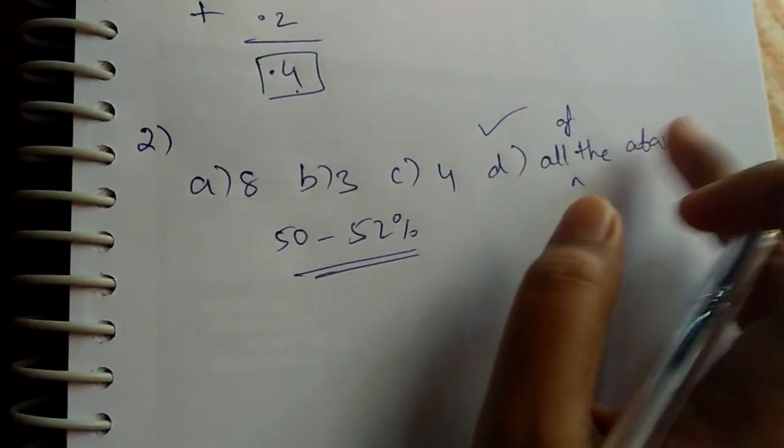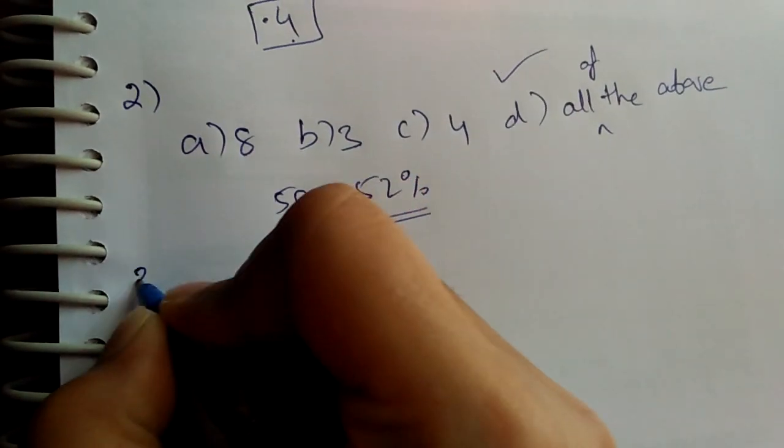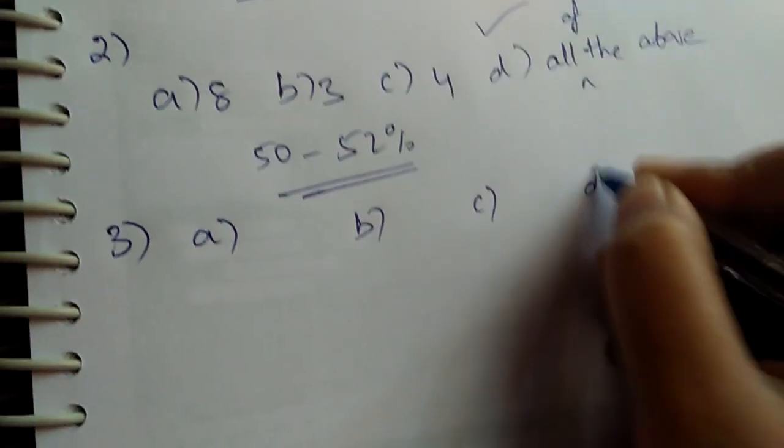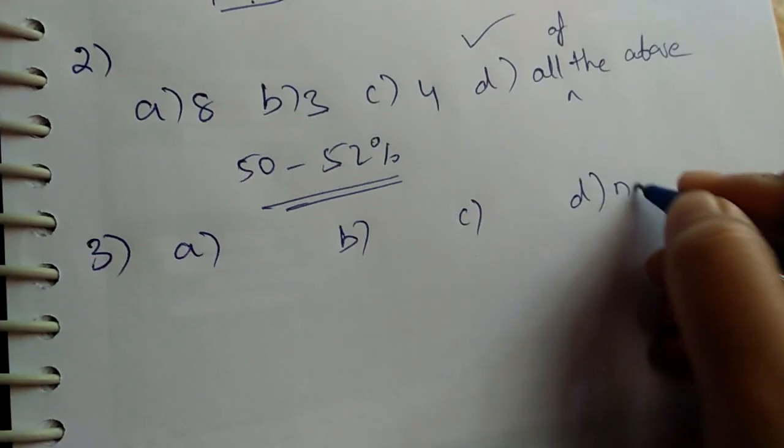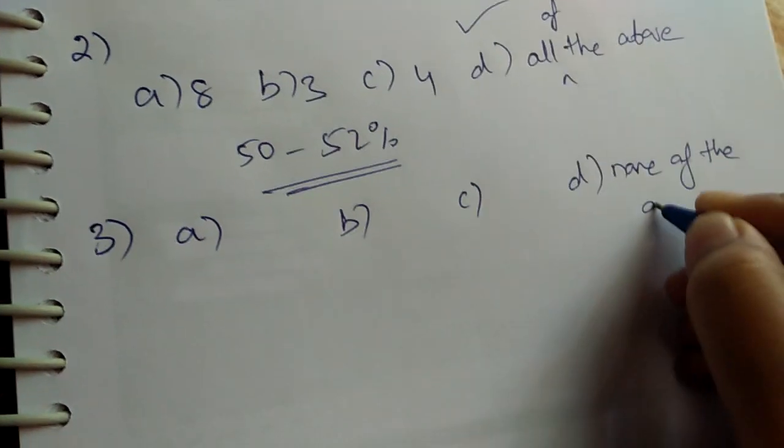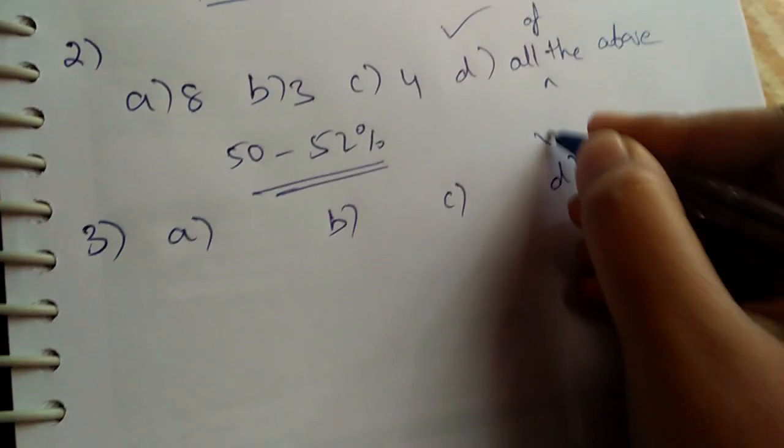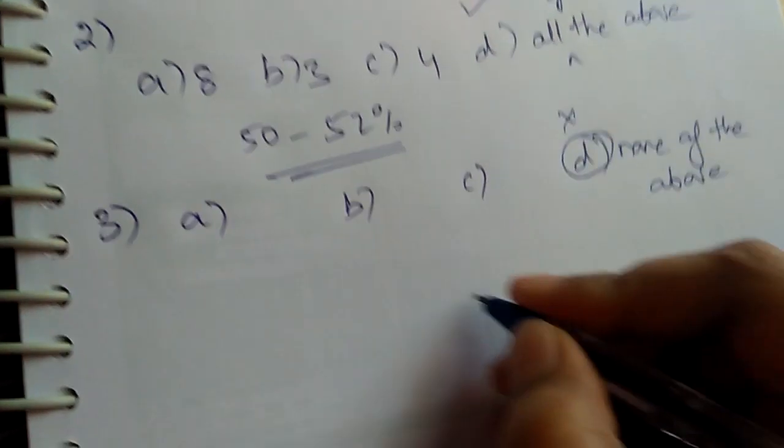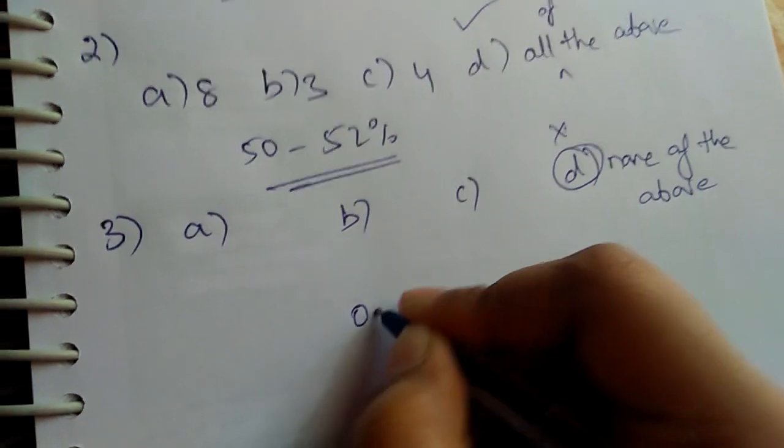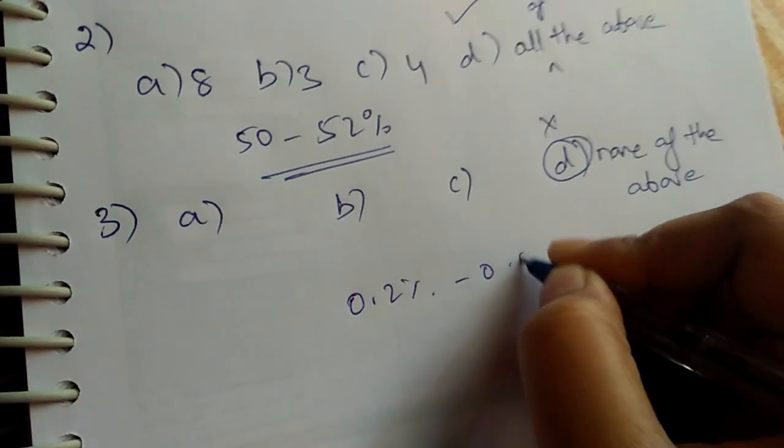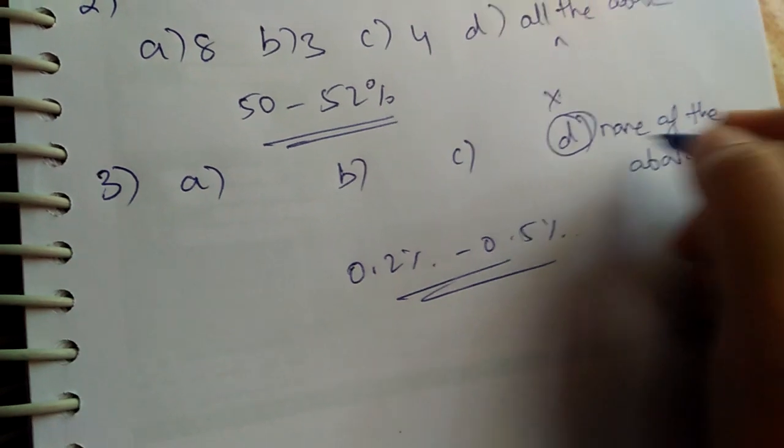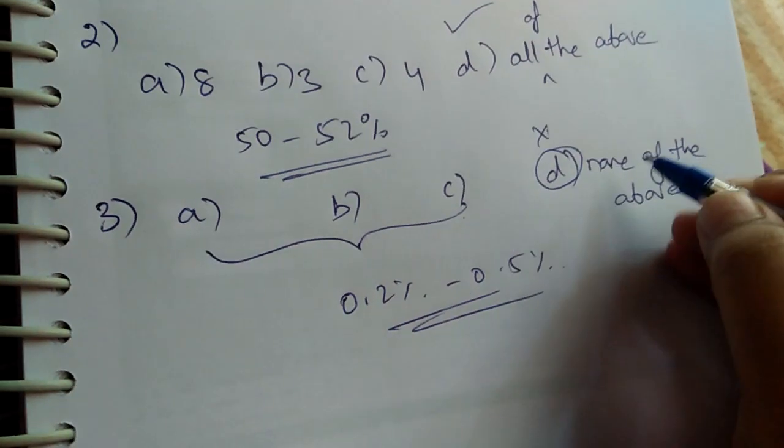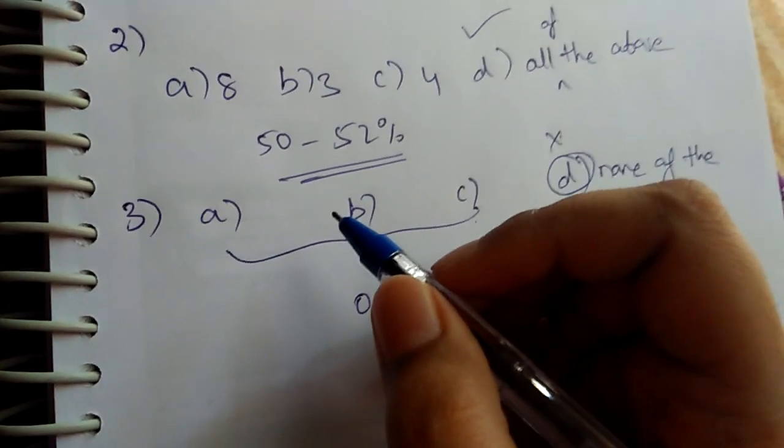The third tip I would like to give you is whenever there are four different options and the last option is 'none of the above,' never choose this option. You can never choose this option because only 0.2% to 0.5% chances will be there for 'none of the above' to be the correct option. When you have 'none of the above' as one option, make sure you choose between these three options.